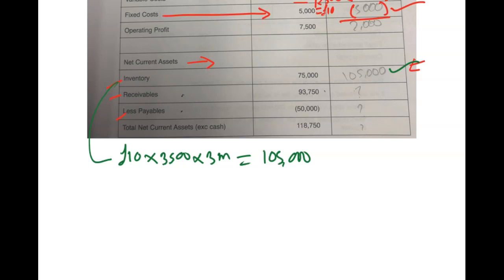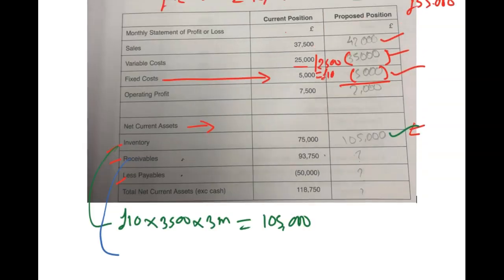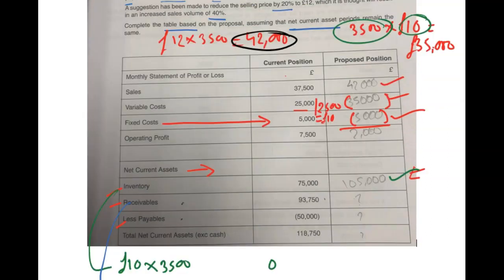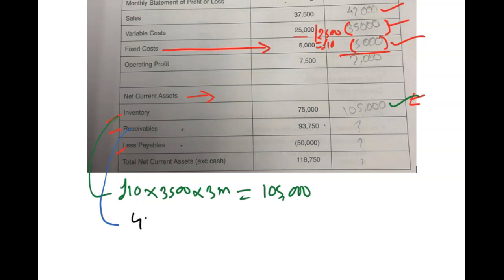Now, the second one is our receivables. We want to check what is being said regarding the receivables. Customers take two and a half months to pay, so two and a half months of your sales. What is your total sales? £42,000 is your sales each month. So two and a half months: £42,000 times 2.5 months equals - get the calculator ready - £42,000 times 2.5 = £105,000.